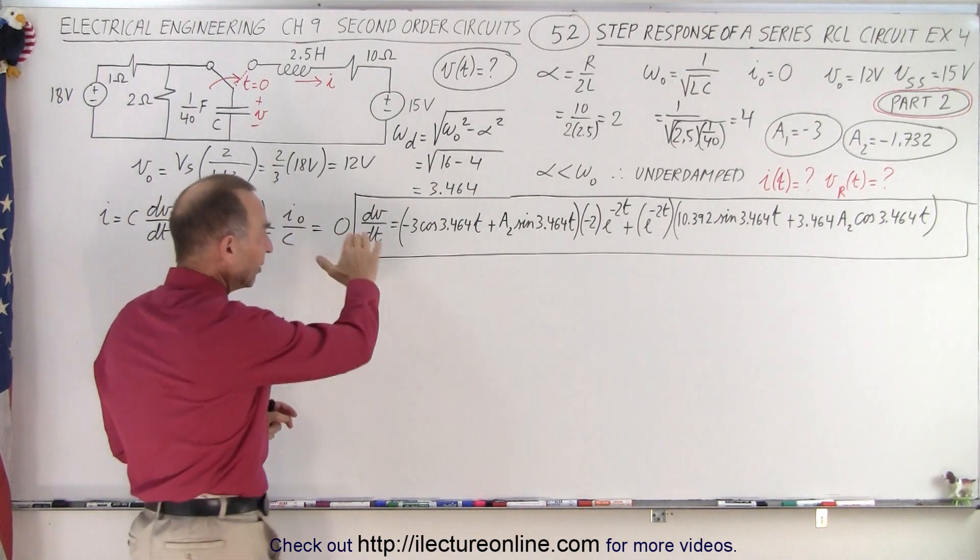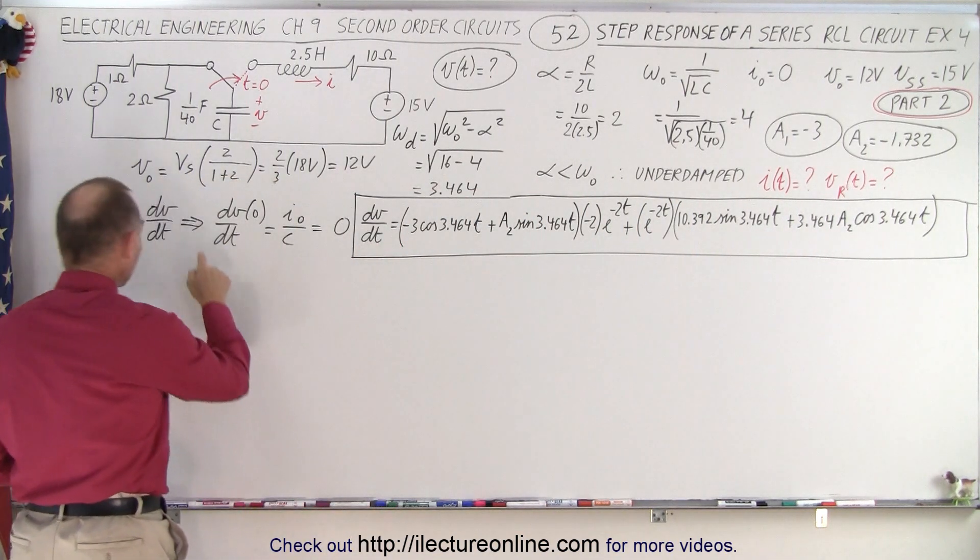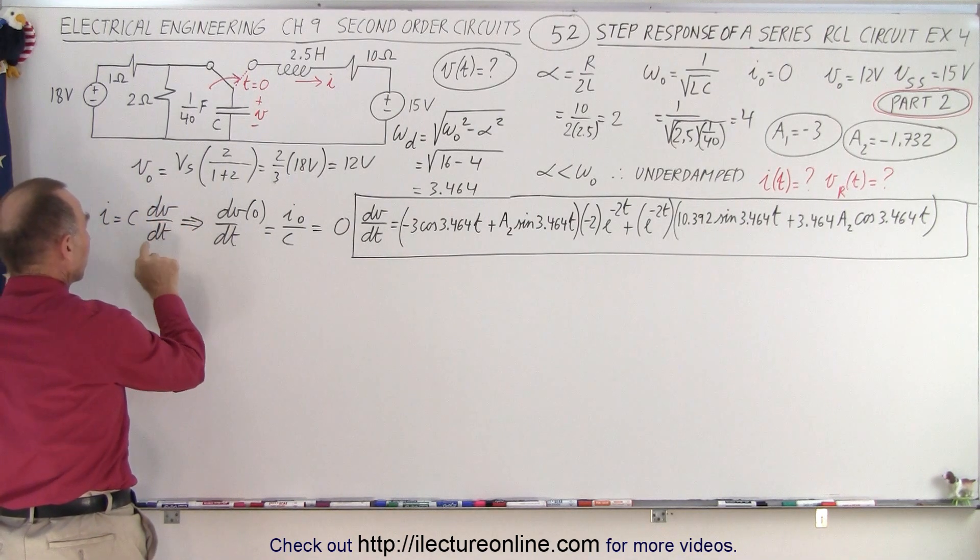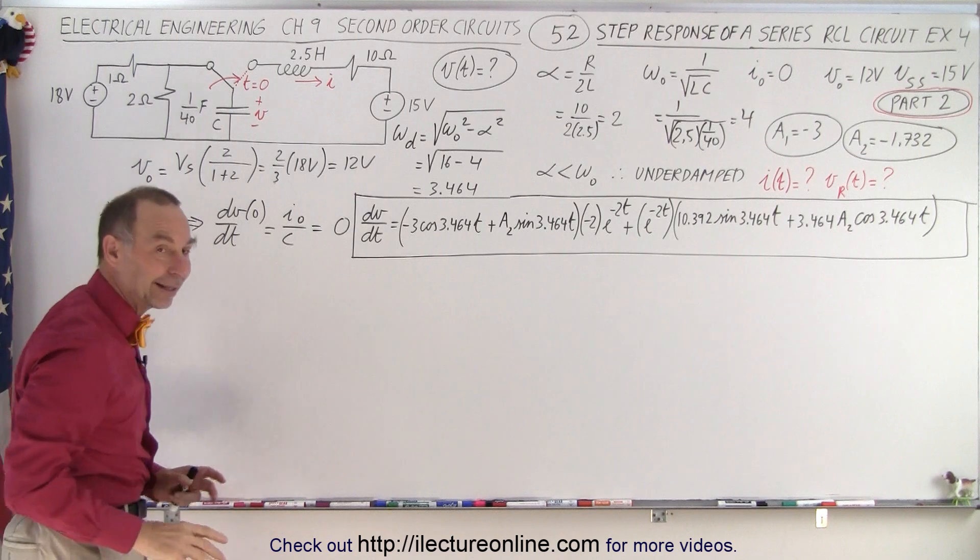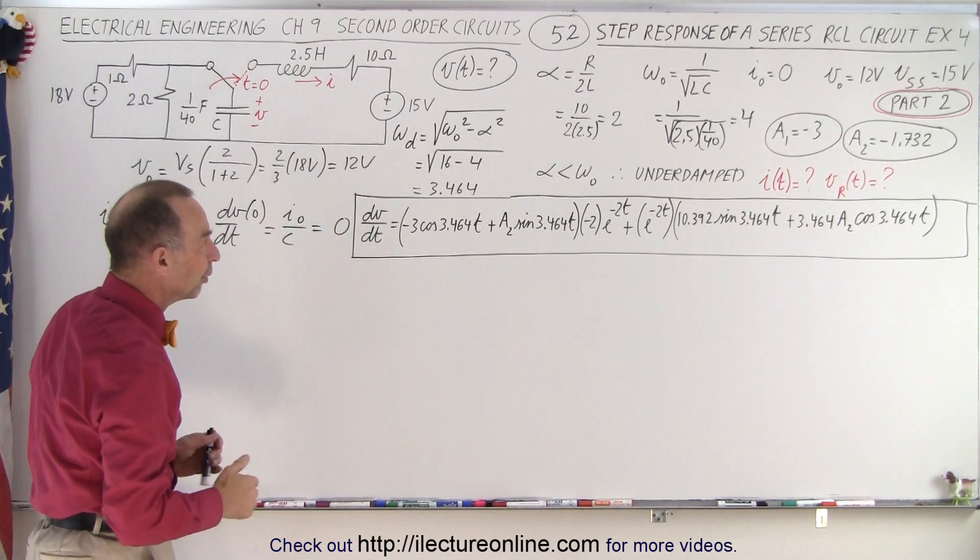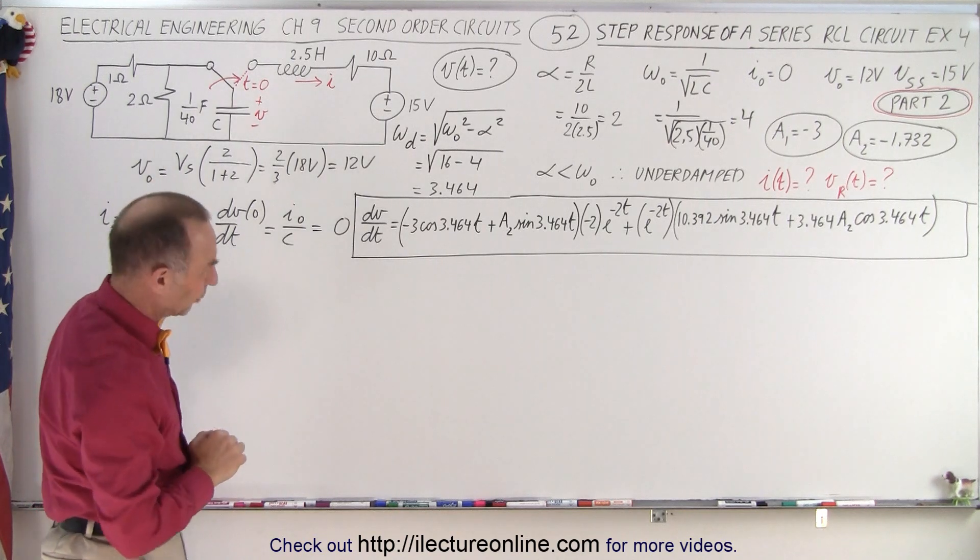Why do we need this equation? It turns out there's a relationship between the current and the derivative of the voltage with respect to time when we multiply times the capacitance. So we need to complete this, put it into a more simplified form, and then we can solve for the current.